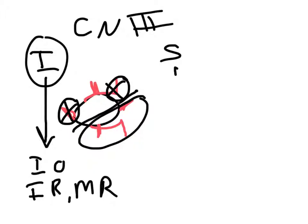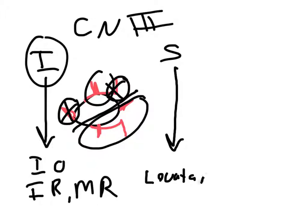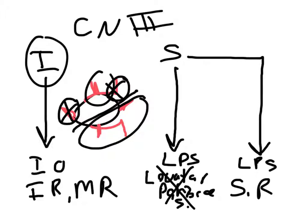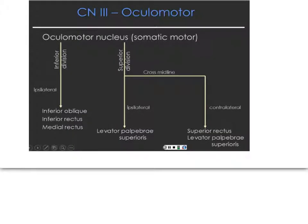The superior division also goes down ipsilaterally, but it does not innervate the superior rectus ipsilaterally. Instead, ipsilaterally it innervates the levator palpebrae superioris (LPS). Then it crosses the midline and, on the contralateral side, innervates the levator palpebrae superioris and the superior rectus. So from the oculomotor nucleus, we get a superior branch and an inferior branch going to their respective places, with the superior branch crossing the midline.